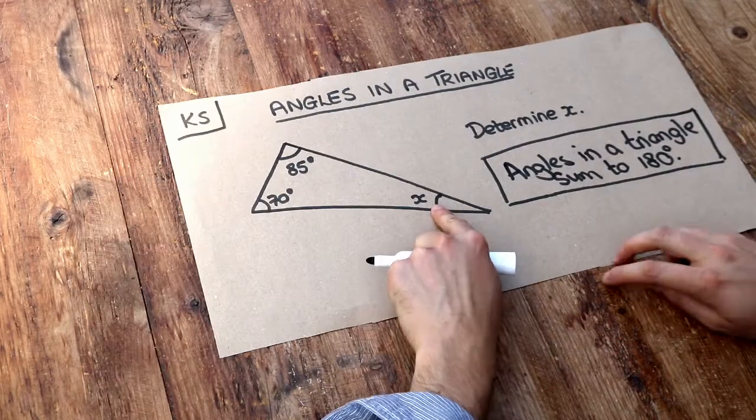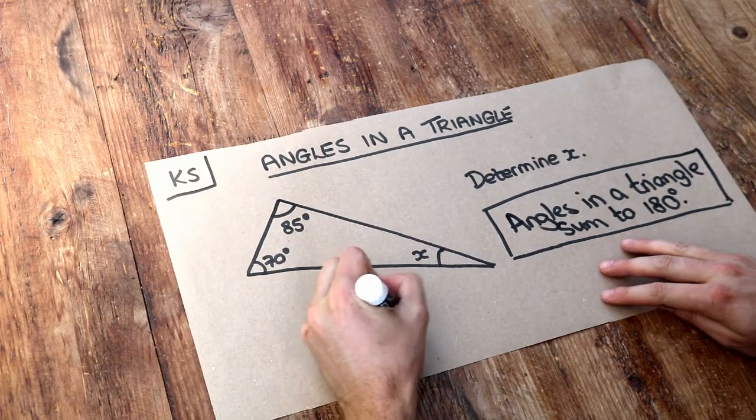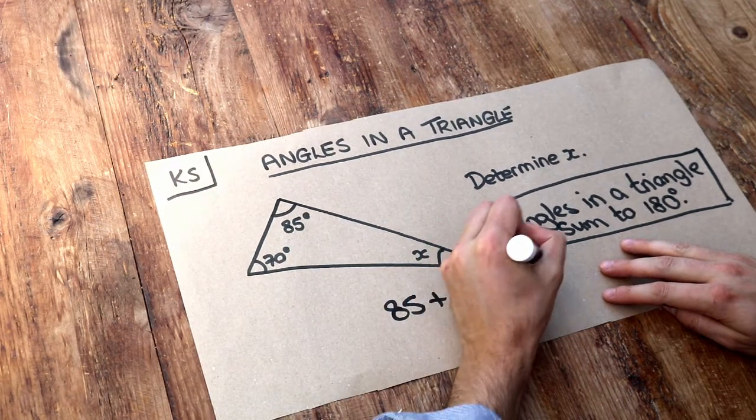So let's say we want to find this angle here. Well, if they all add up to 180, we just need to add these two angles together, and that comes to 155 degrees.